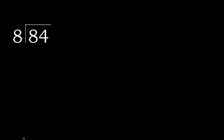84 divided by 8. 8 is not less, therefore work with 8. Here, 8 multiplied by which number is nearest to 8 but not greater? 8 multiplied by 2 is 16, which is greater. Multiplied by 1 is 8, which is not greater.